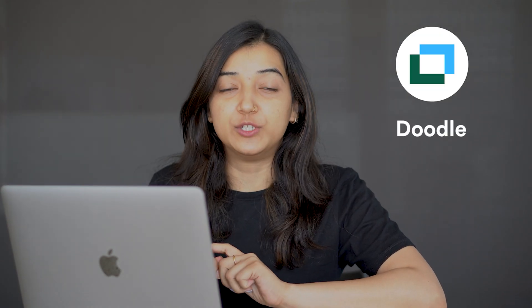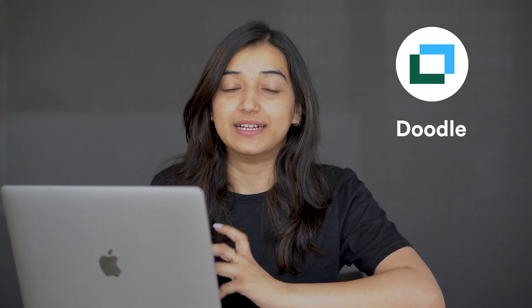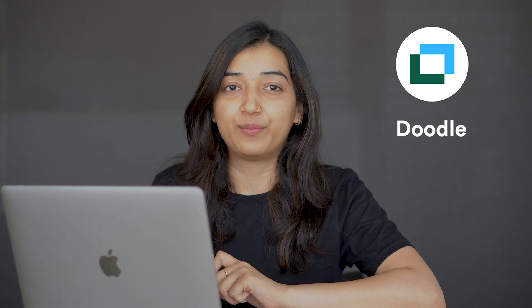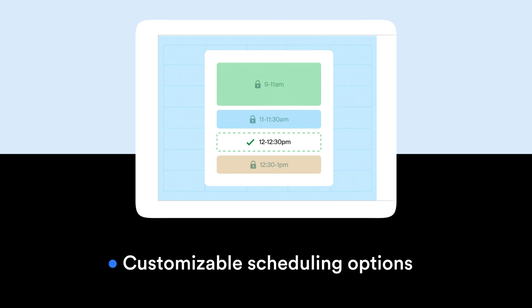Number three is Doodle, which is a tool that makes it easy to find the time that works for all. One interesting feature is that it allows users to create polls with different time options and invite participants to vote on the best time, making it easy to find a time that works for everyone. It also offers customizable scheduling options such as setting time slots, time zone detection, and availability preferences.